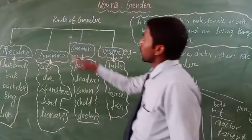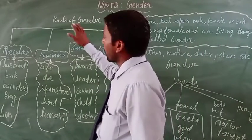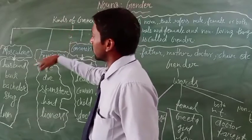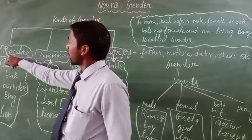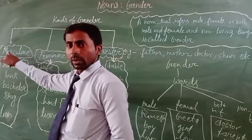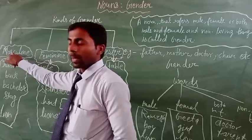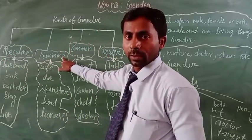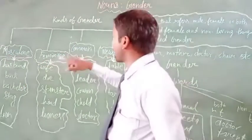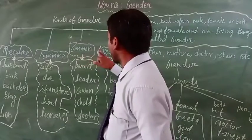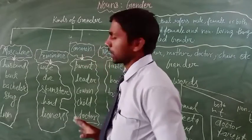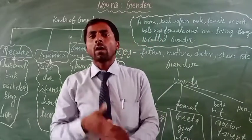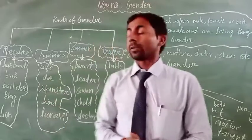There are four parts of gender. The first is masculine gender, the second is feminine gender, then common gender, and finally neuter gender. We will read about each one by one. Let's start by discussing masculine gender.